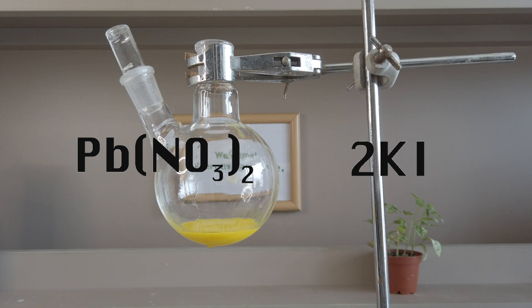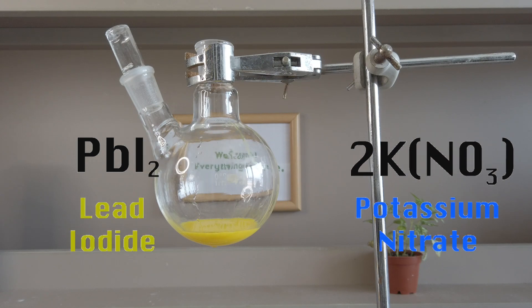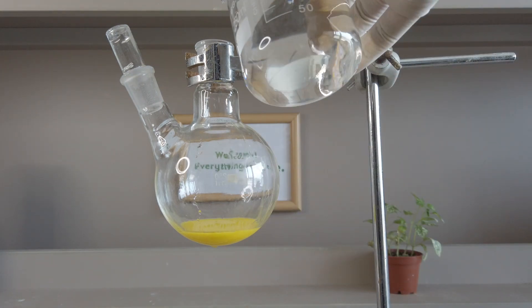The potassium iodide reacts with the lead nitrate to form potassium nitrate and lead iodide solid. The lead iodide solid is yellow in color and gives the solution a golden yellow appearance.